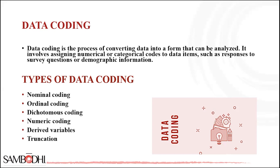Some common types of data coding include nominal coding. This involves assigning labels or categories to data items. For example, responses to a survey question about marital status might be coded as single = 1, married = 2, divorced = 3, and widowed = 4.